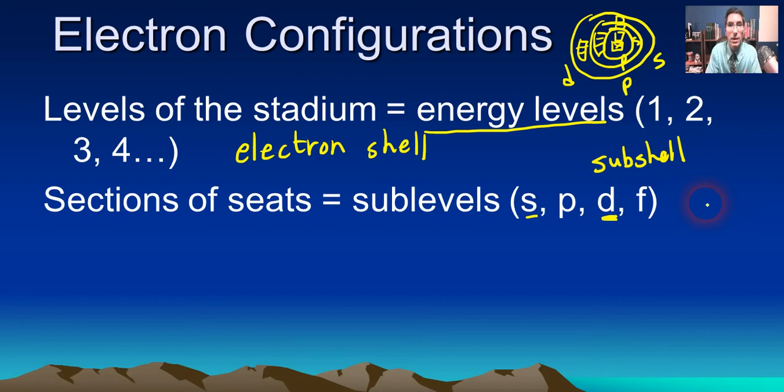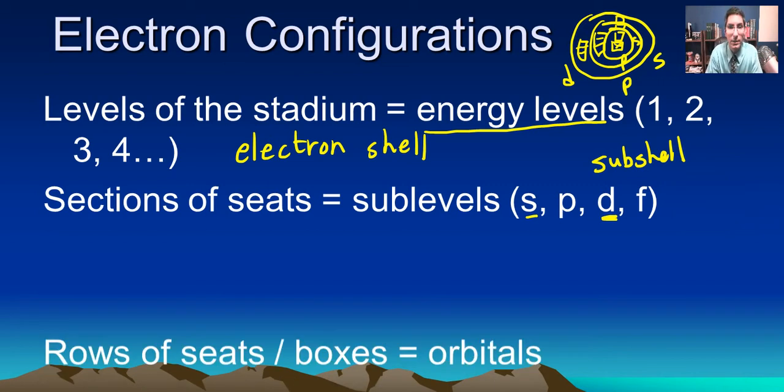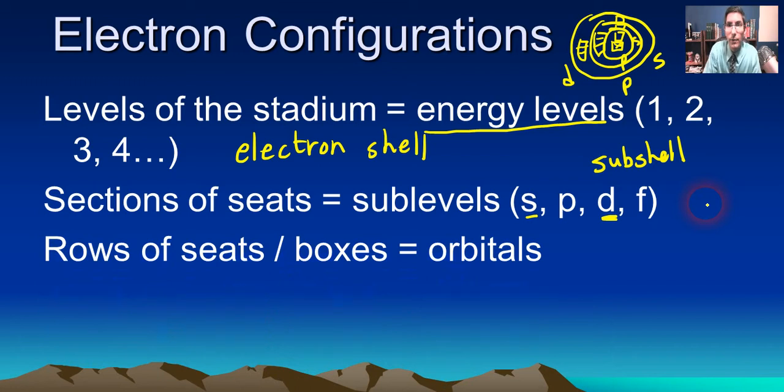Now if we take some of these sublevels, we notice that several of them have multiple boxes. The S sublevel only had one box in our model here. The P sublevels each had three boxes. The D sublevels each had five boxes. If we got as high as the F sublevel, it had seven. Each box or each row of seats, as we sometimes called it, is called an orbital.